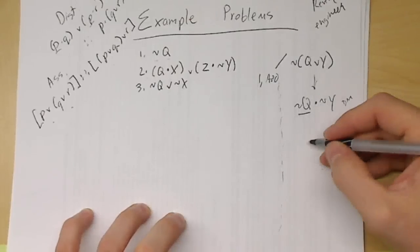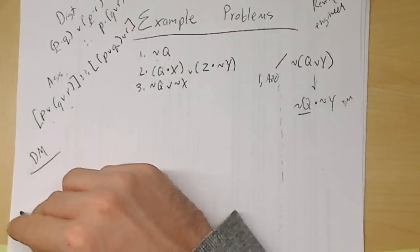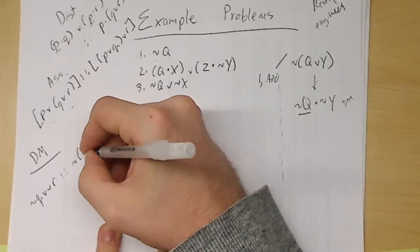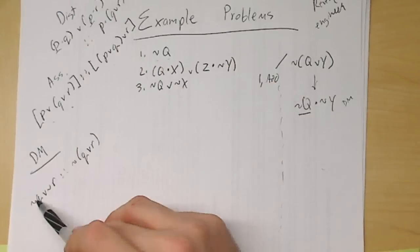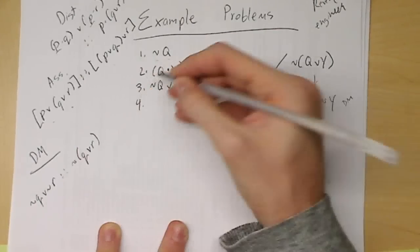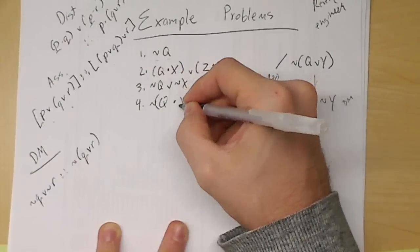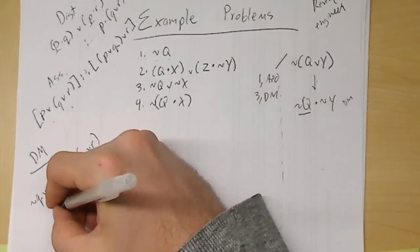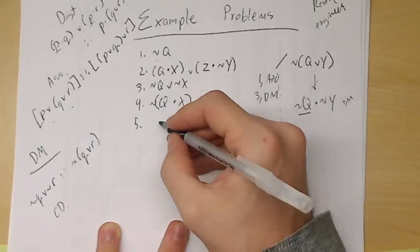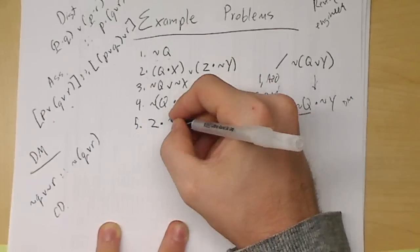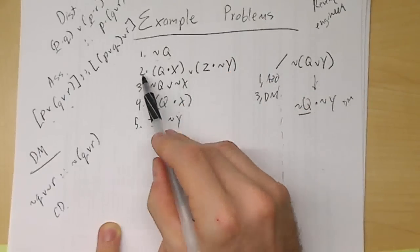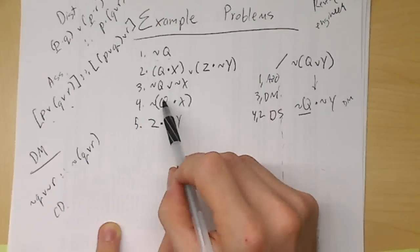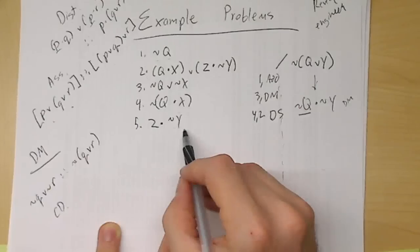Now that I have ¬(Q∧X), I can use the disjunctive syllogism. Because line two says (Q∧X)∨(Z∧¬Y), and now I have ¬(Q∧X). So that means line five is going to be Z∧¬Y — that's line four and two, disjunctive syllogism. Because if I don't have Q∧X but here's Q∧X or Z∧¬Y, I must actually have Z∧¬Y. I said I needed to get the negation of Y by itself. So let's commutate and then simplify.